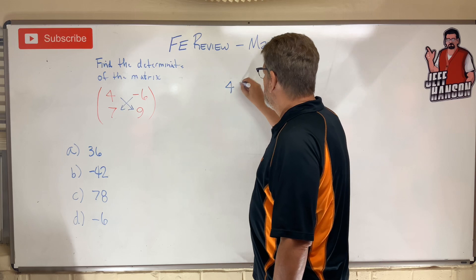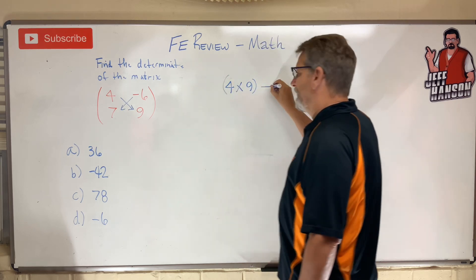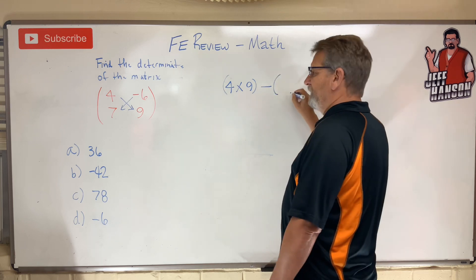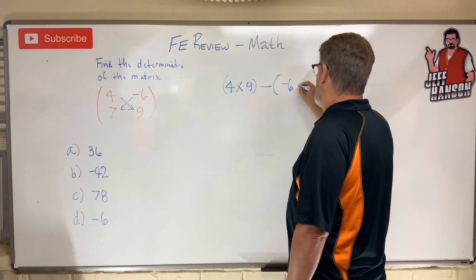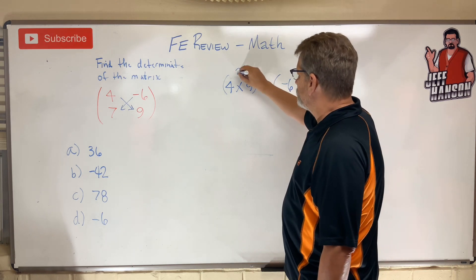Okay, four times nine, okay, minus parentheses minus six times seven, okay? Four times nine, that's 36.